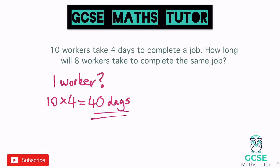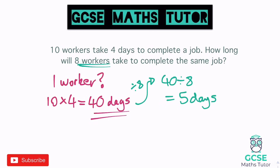That's how long it would take one worker. Now we've got eight workers — more than one — and we'd assume it would be eight times faster. So we divide 40 days by eight, which gives us five days to complete the job. This is inverse proportion — we have more than four days: five days. Our answer makes sense. Multiplying by four gave us 40 days for one worker, and dividing by eight brings that down to five.